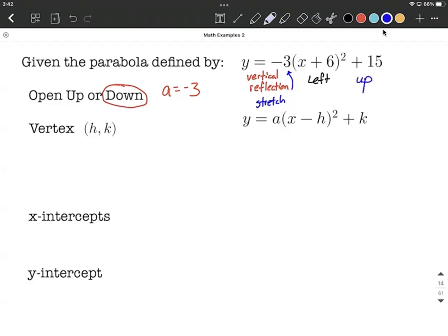So when we think about our vertex, you could just line up the formula and pick out h and k. But I like to think about it, our vertex didn't get affected by the negative 3, but it has been moved from the origin, 0, 0, to the left 6 and up 15. So that's going to put it as left 6 would be at negative 6 for an x value, and up 15 is going to be positive 15 for the y value.